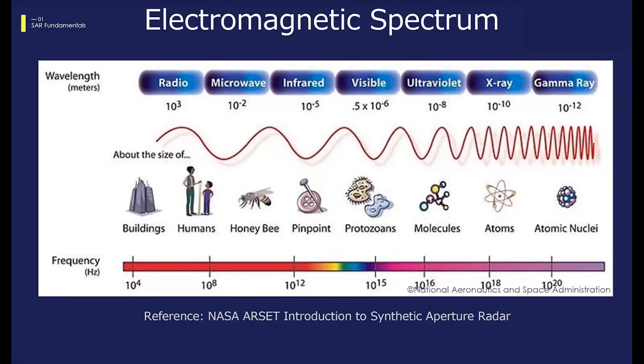I want to start off by actually taking a look at the electromagnetic spectrum. The electromagnetic spectrum is basically the range of electromagnetic energy spanning from long wavelengths such as radio waves to short wavelengths such as gamma rays, which are as small as the length of an atomic nucleus.